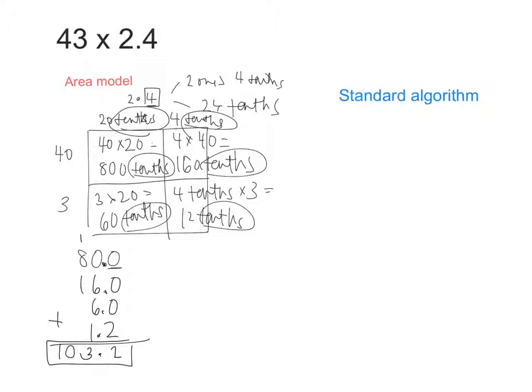Now let's try the standard algorithm because we know both ways, right? So we can do 43. Now, instead of thinking about 2 and 4 tenths, let's just call it 24 tenths. So now we're going to multiply. 4 times 3 is 12. And we'll regroup the 1. 4 times 4 is 16. And then we'll add the 1, which is 17. Now we're working at what looks like the tenths place. We'll add a 0 here, just like we do with normal multiplication.